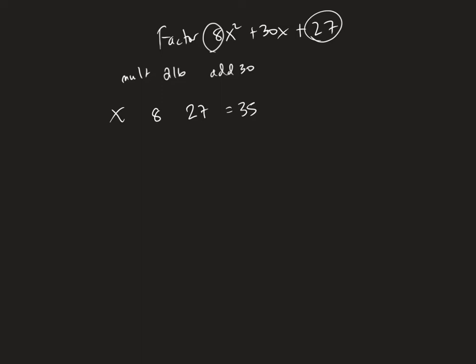So that's not right. So we need the sum to be smaller. So essentially, when you need the sum to be smaller, we want to move the numbers closer together. So I'm going to try 9 because 2, 1, and 6 add up to be 9. We can divide by 9.